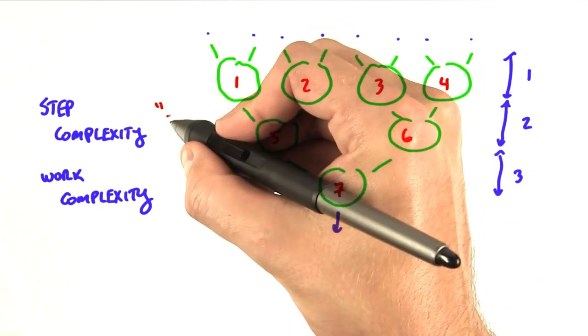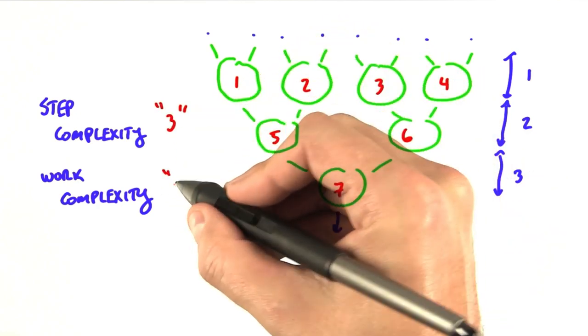So we'd say the step complexity is three, and the work complexity is seven.